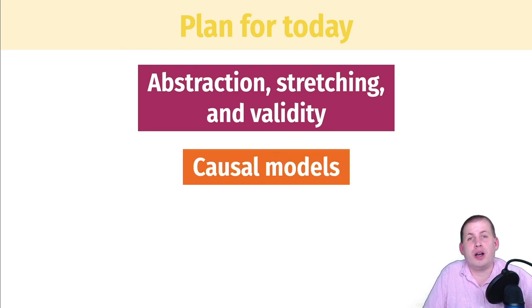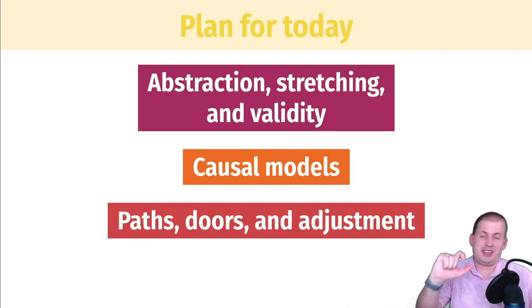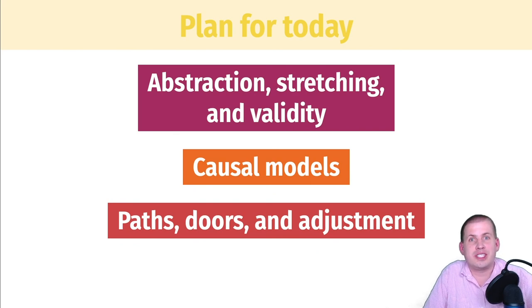Then we'll talk briefly about what causal models are and how we can use them to adjust for things so that we can isolate the pathways that we care about and talk about causation between specific nodes in our causal pathway or in our causal model. And we'll talk about that once we get there. So if it sounds confusing and scary now, don't worry, we'll get there. And it's not too bad.